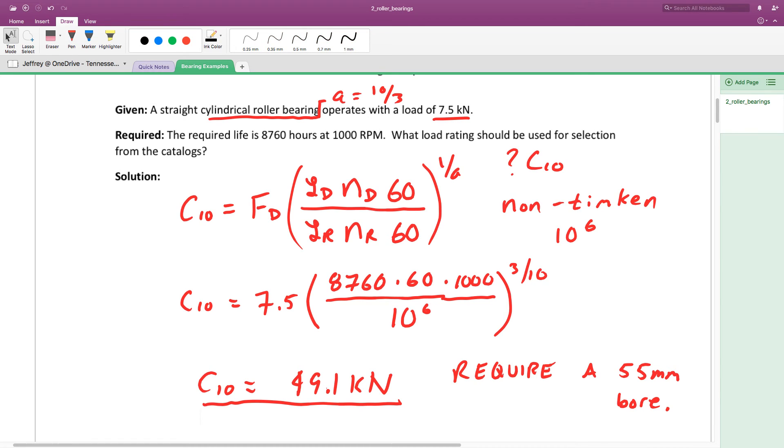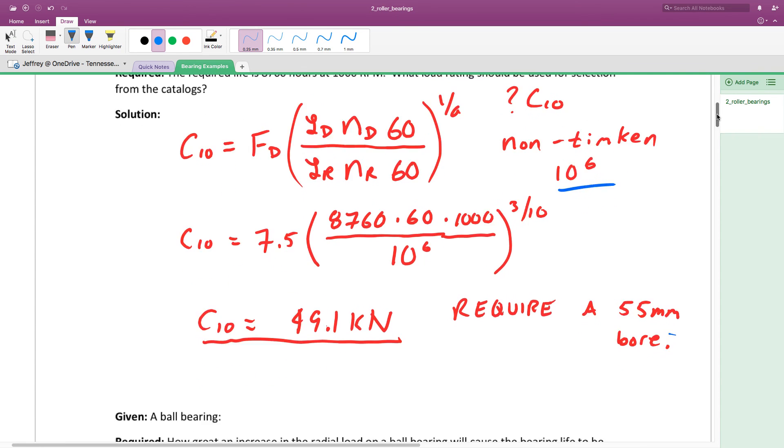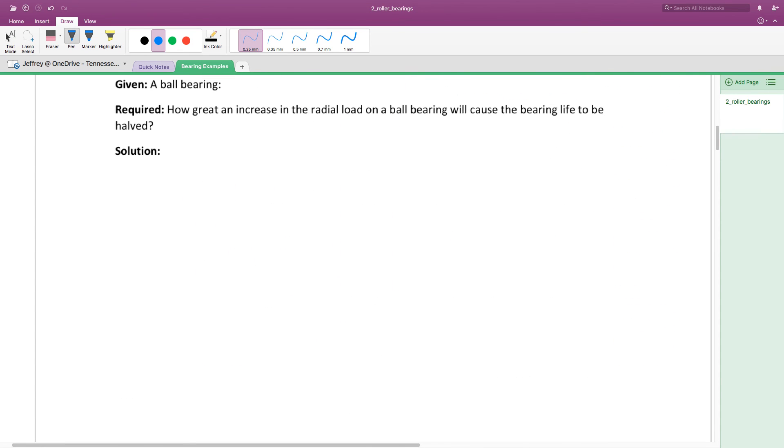If it was a Timken bearing, the only thing that would change would be that rated life value. When you look up the bearing you want, make sure you're using a Timken table. The tables in Shigley are non-Timken, so you want to use the 10^6.